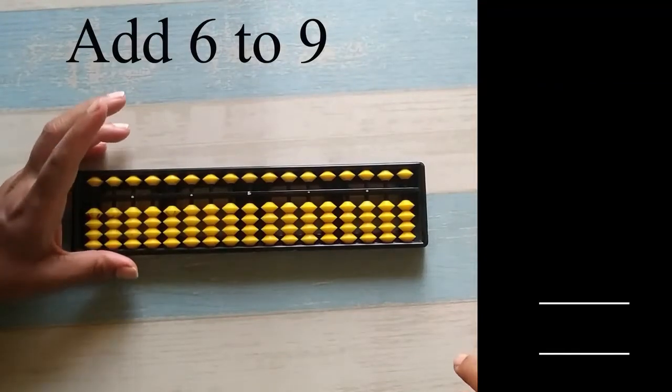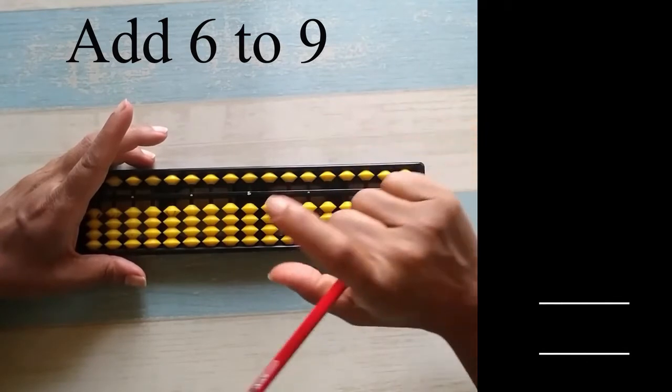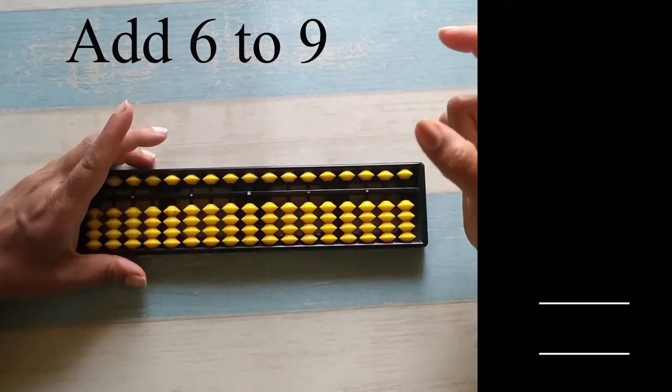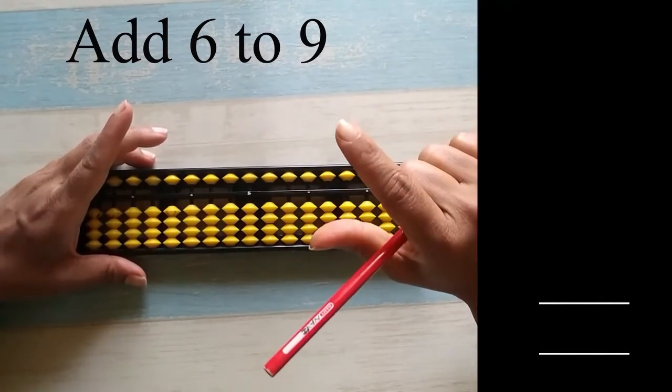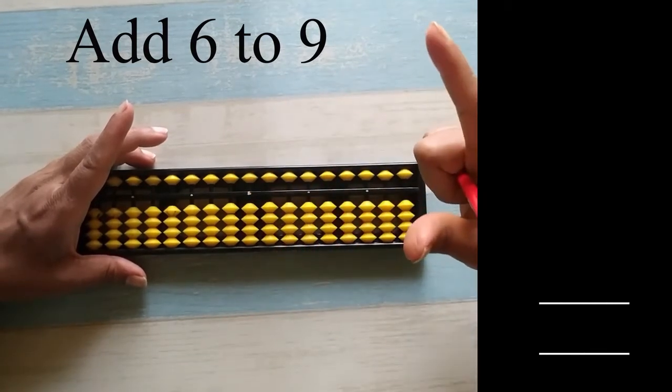Addition 6 to 9. How to do 6 to 9? For lower beads you use your thumb, upper beads you use your index finger for 5.